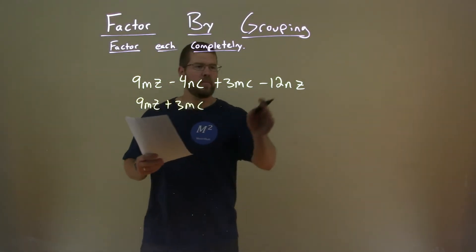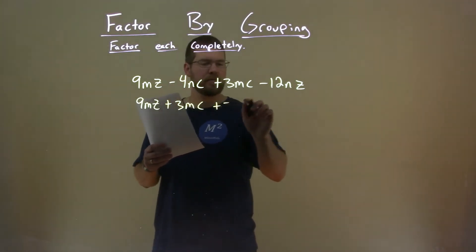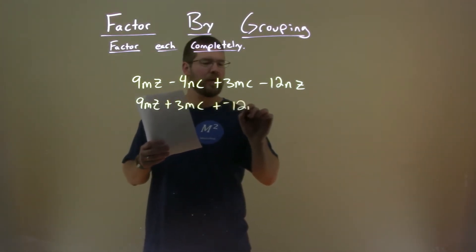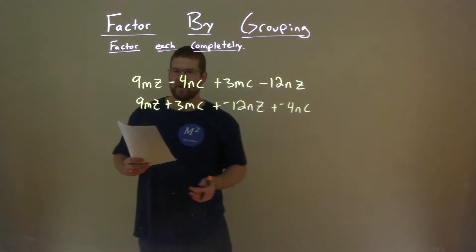I then am going to put my 12NZ, but I'm going to make it a plus and minus instead of minus here, plus a negative 12NZ, and bring down the last part, again, plus a negative 4NZ. They both have an N in it, and 4 goes into both of them.